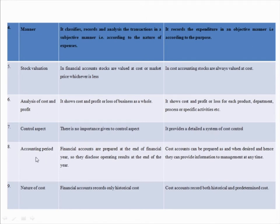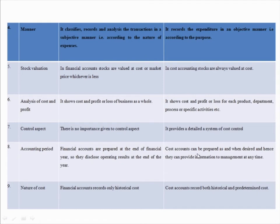Eighth difference is accounting period. Financial accounts are prepared at the end of the financial year, so they disclose operating results at the end of the year. Cost accounting can be prepared as and when desired by management.